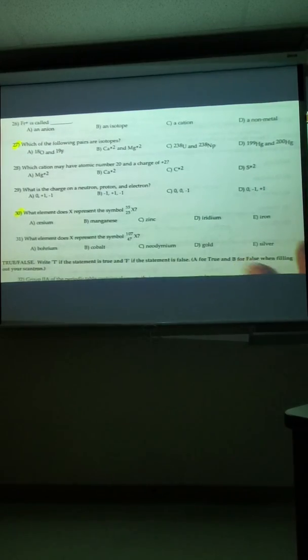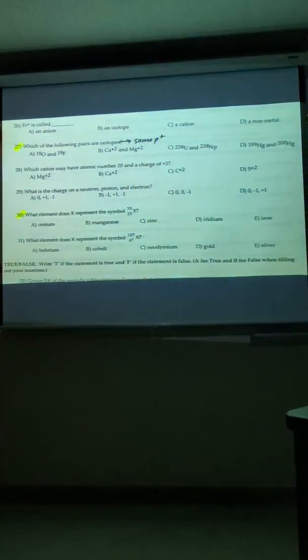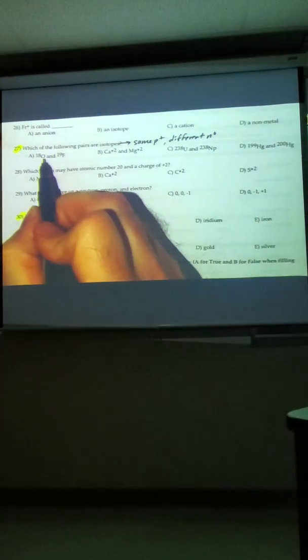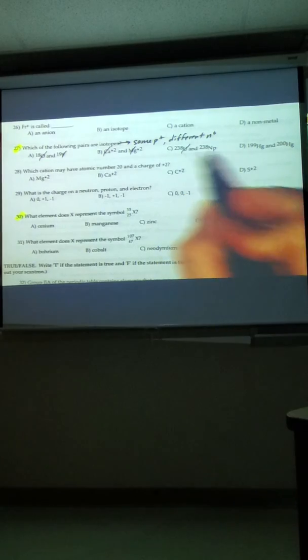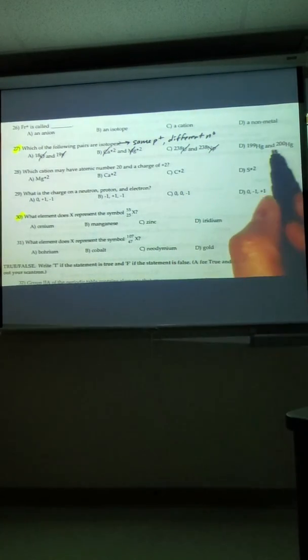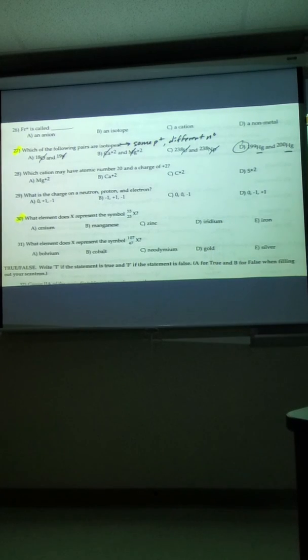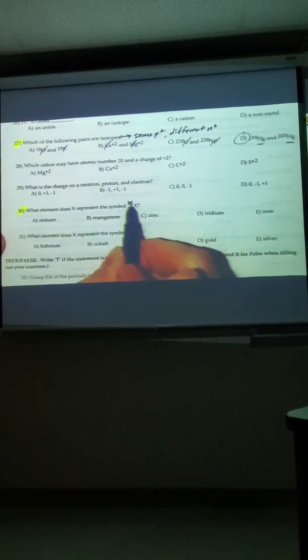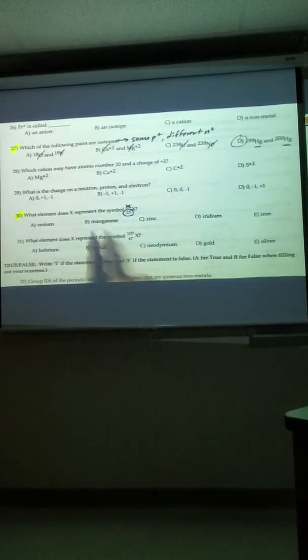Number 27 says, which is a pair of isotopes? Definition of an isotope means the same protons, but different neutrons. So your mass number is going to change. Here you have oxygen and fluorine, that's different protons. Calcium and magnesium, that's different ions of different protons. Here we have uranium and neptunium. They have the same mass number, but different number of protons. Here we have mercury and mercury, which is the same number of protons, and then different number of neutrons, because their mass has changed. Number 30, really fast if you know what to look for. Mass number is irrelevant, so don't worry about it. What's important about X is, this is the atomic number for X. So just find 25 on the periodic table, and you're going to find the answer. In this case, manganese is number 25.